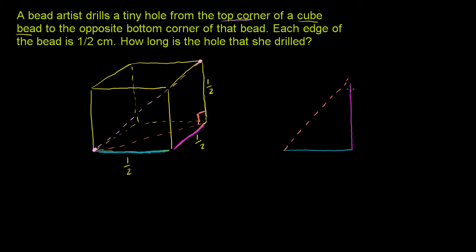We know this is a right angle — this is a cube we're dealing with. We know this side is 1½ centimeters and this side is 1½ centimeters. So if we call this diagonal x, we can apply the Pythagorean theorem: x squared is equal to 1½ squared plus 1½ squared — the hypotenuse squared equals the sum of the squares of the other two sides.